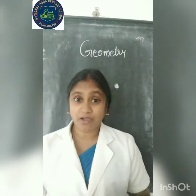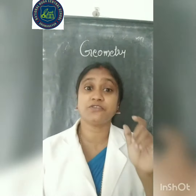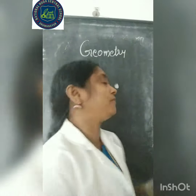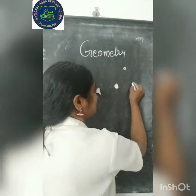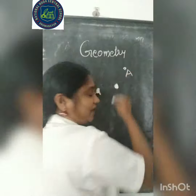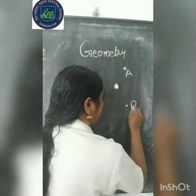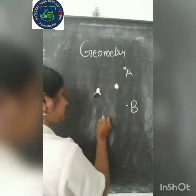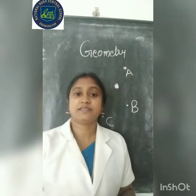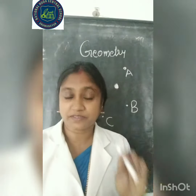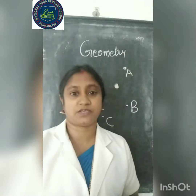We use a dot to represent a point. Yes, this is a dot. So, this is a point A. And this is a point B. And this is point C. That is, a dot represents a point. It means a location.